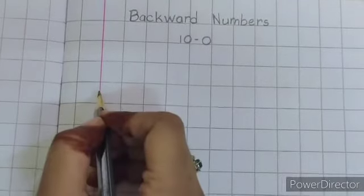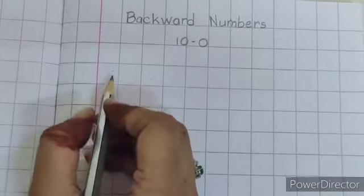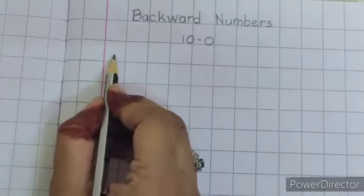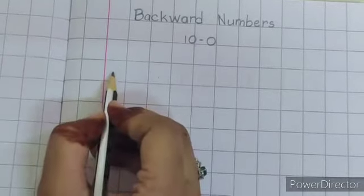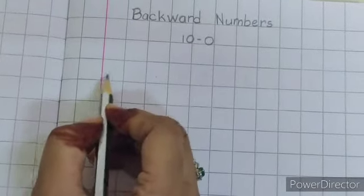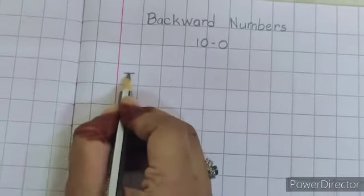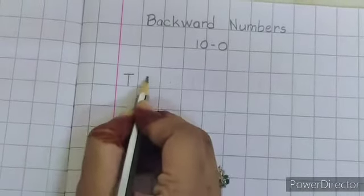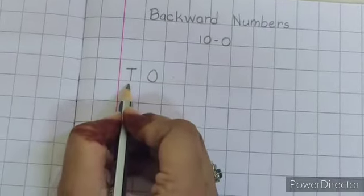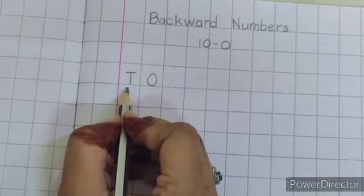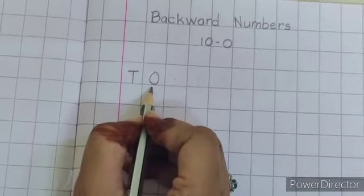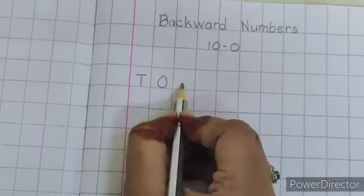Now we will write T, O. Leave this box below this box and start from the red margin line. Write down T, O. T means tens, O means ones.